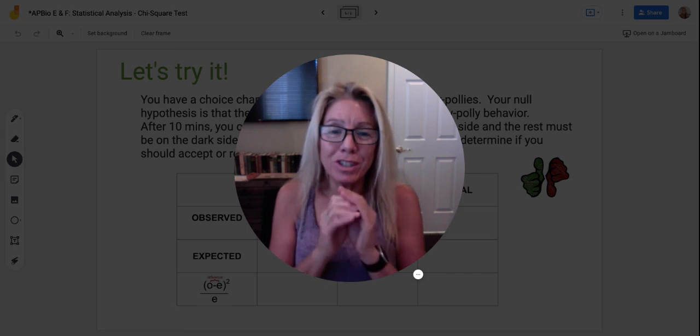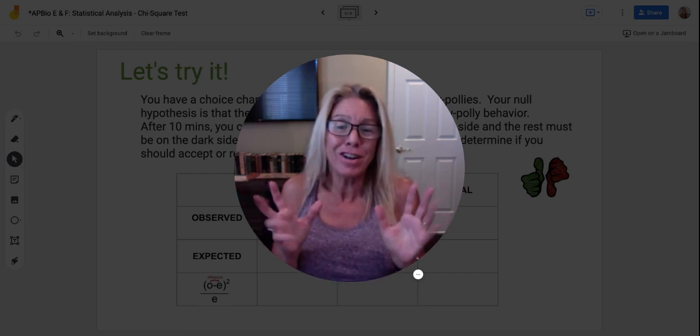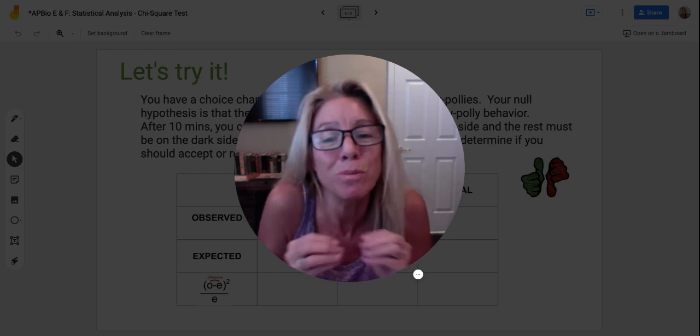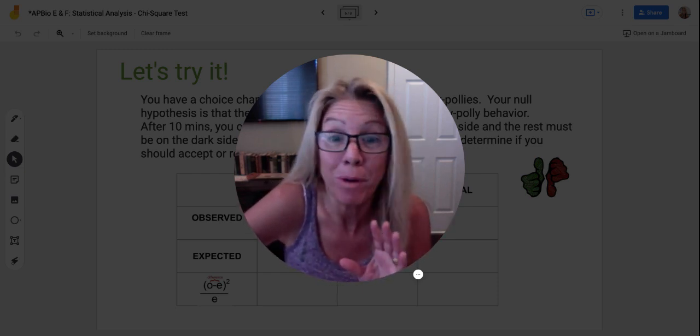So a null hypothesis says there's no connection. And if there is no connection, then your number is going to be so small that the difference is going to be so small that it's not a problem.